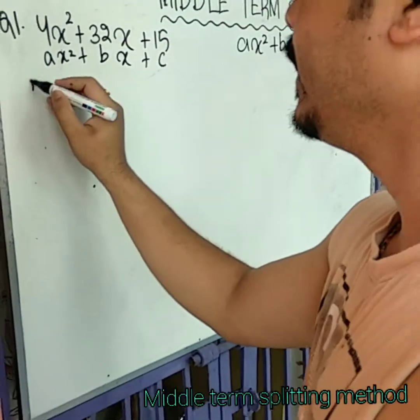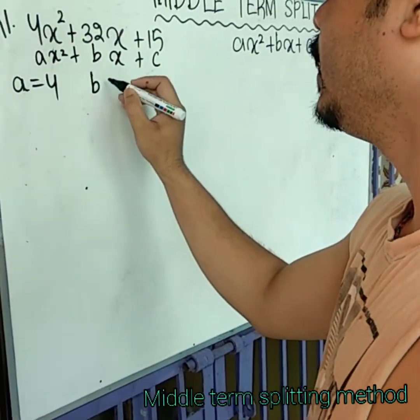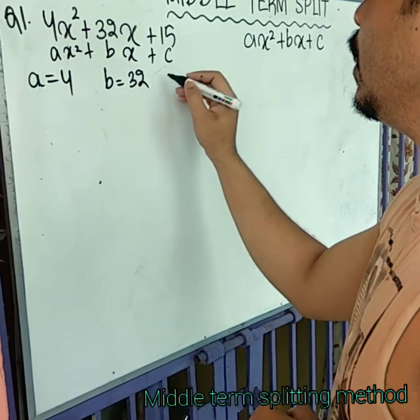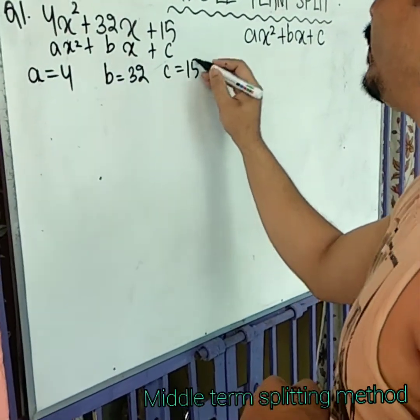This means a value is 4, b value is 32 and c value is 15. Clear?